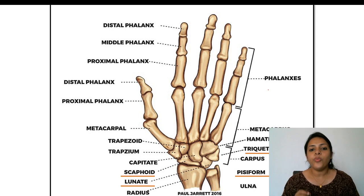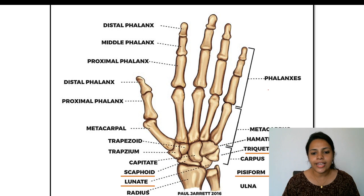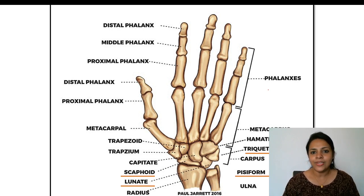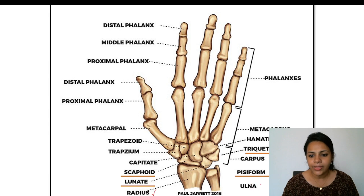Before we proceed with Fishman's method, we need to understand a bit of the anatomy of the hand wrist. The entire hand wrist is composed of four groups of bones. The first group is the ends of the long bones — that is the radius and the ulna.